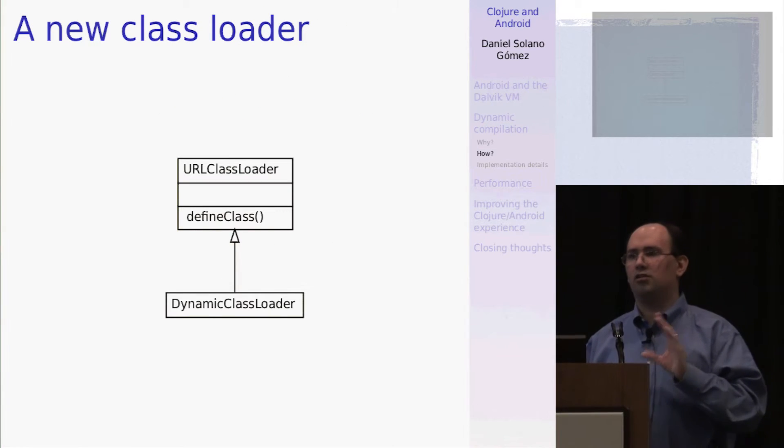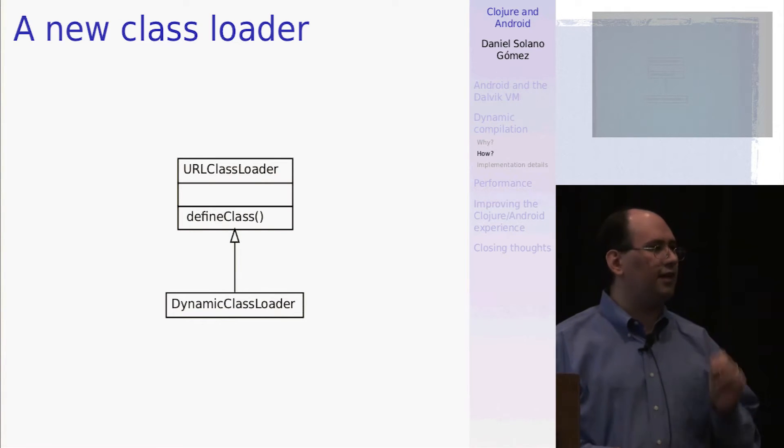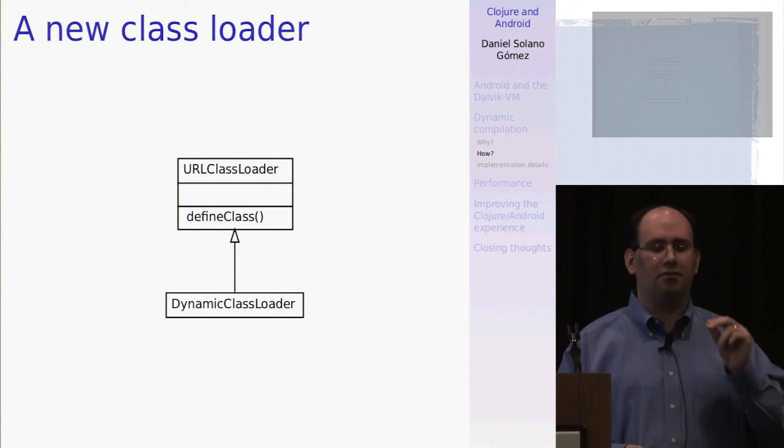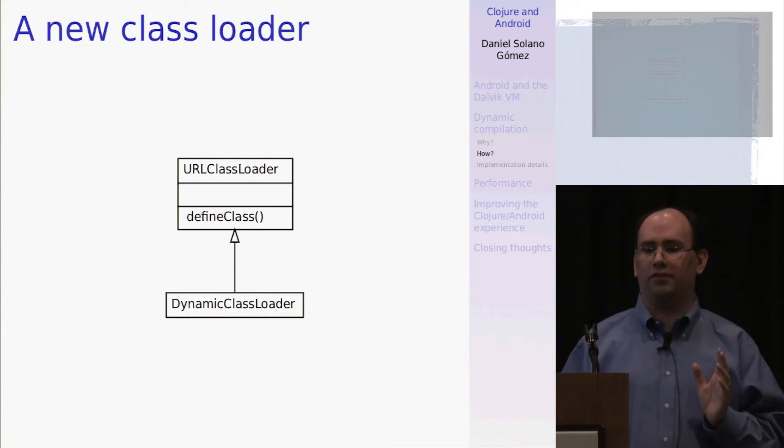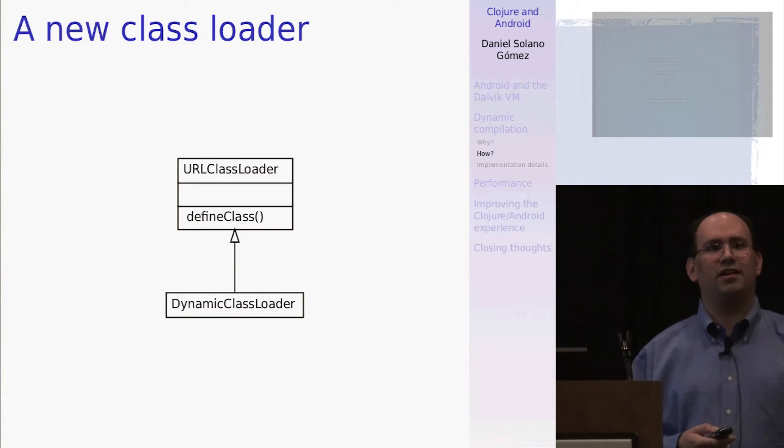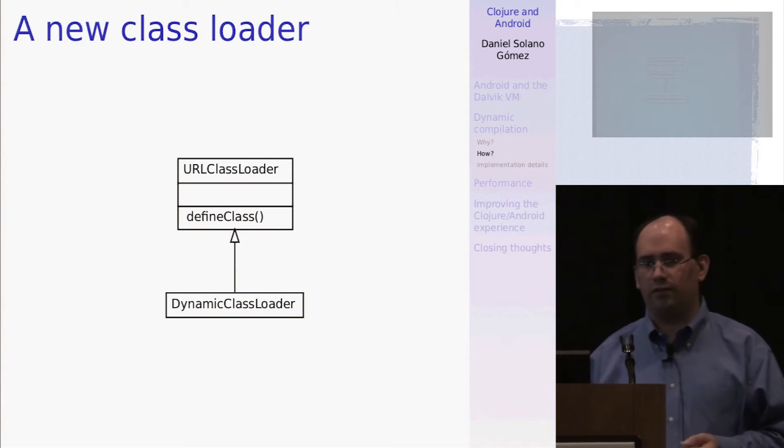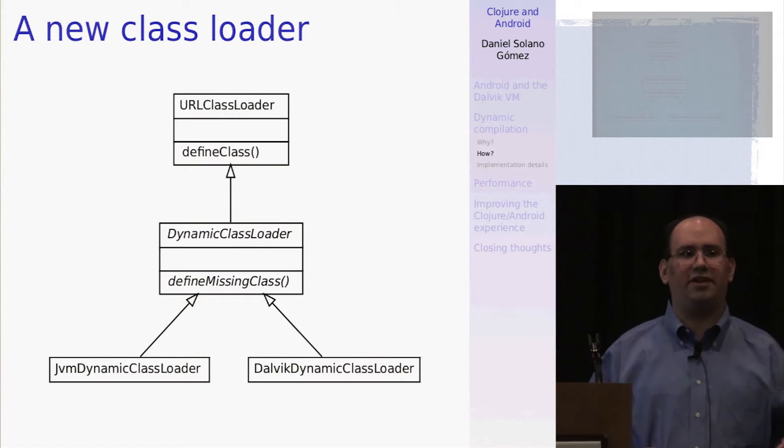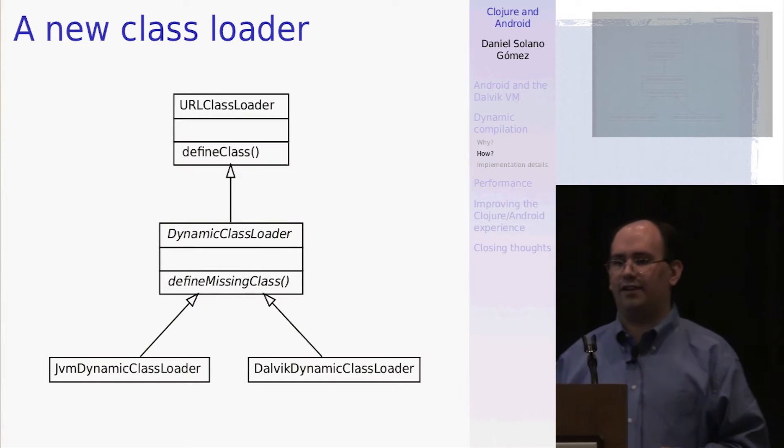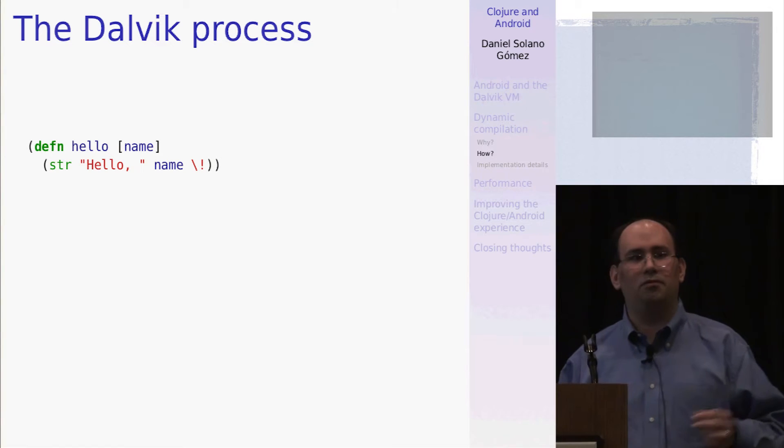So how do we accomplish that? Right now in Clojure, there is a class called dynamic class loader. And this class is tasked with the responsibility of, once you have some emitted bytecodes, creating or instantiating the class that the runtime can then use. So what I've done is I split this up into two different implementations. We have the JVM dynamic class loader, which works just as before, and we have the Dalvik dynamic class loader, which does some extra work.